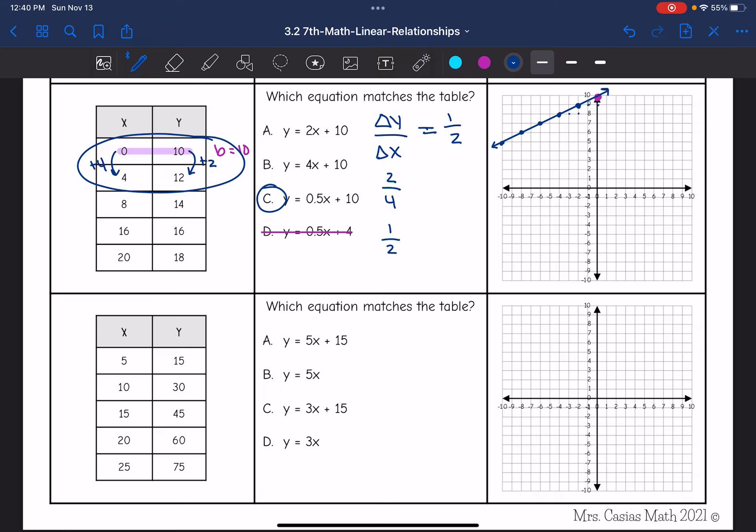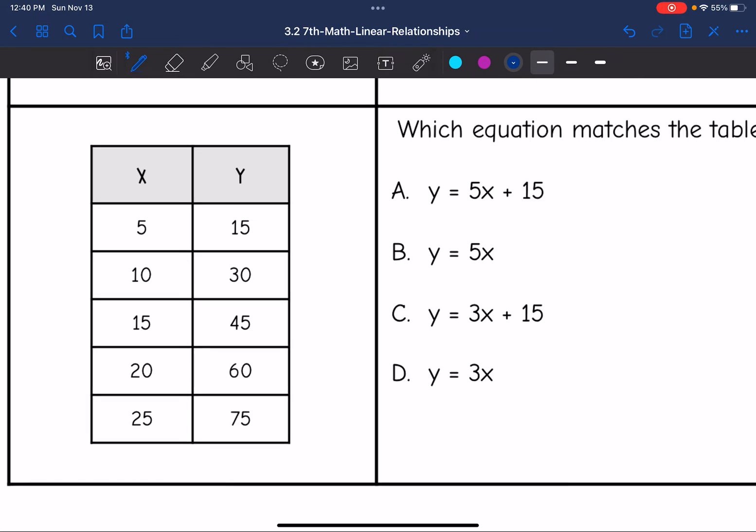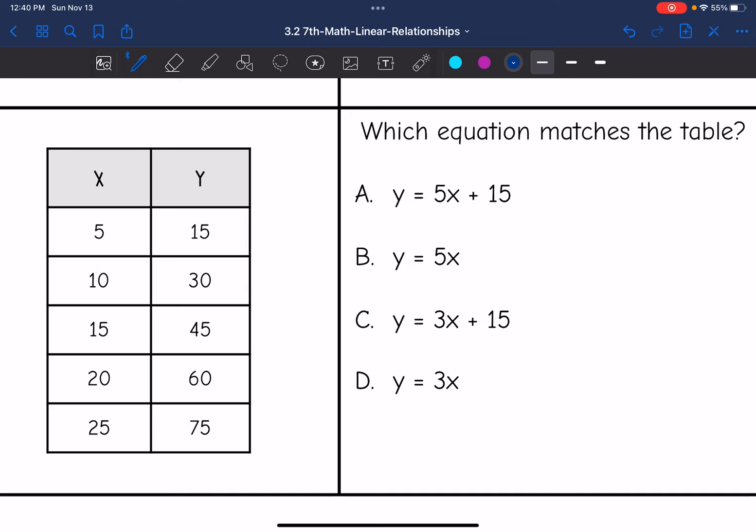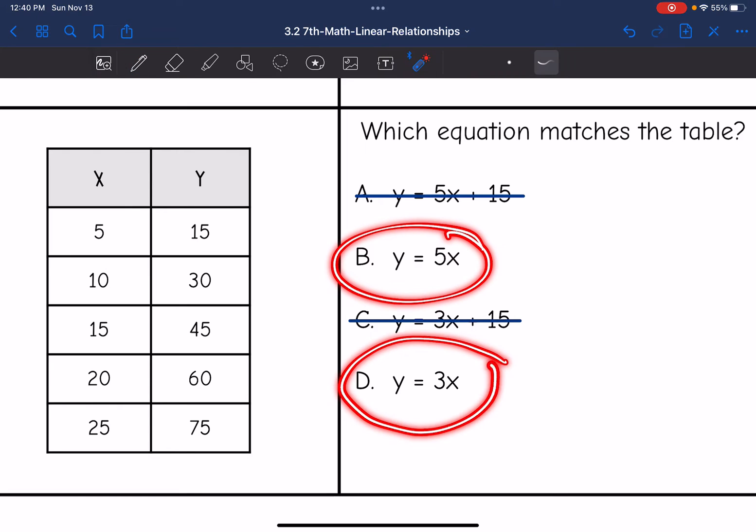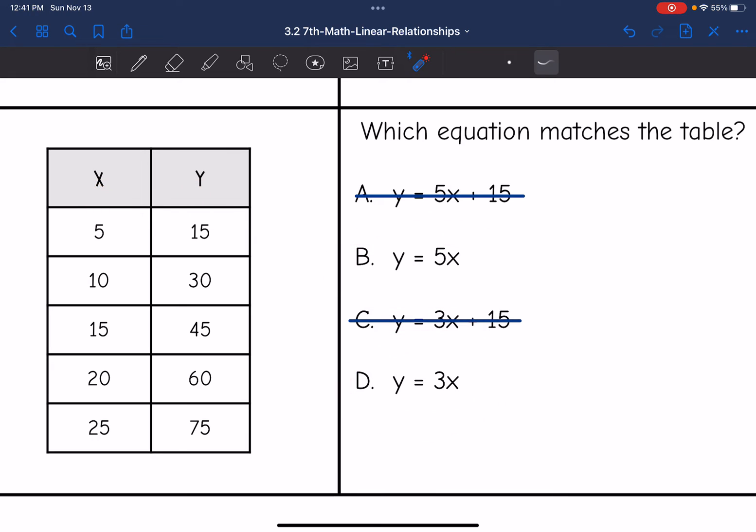Last one, it says which equation matches the table. So I do not see a y intercept because they did not tell me what the x value is when the y value is zero. But I see this point 5, 15 and it's clearly not the y intercept. So that means I can eliminate answer choice A and answer choice C because I know the y intercept is not 15. So with these two answers that I have left, it means I must have a proportional relationship, meaning the y value when x is zero would also be zero. Let's do a little bit more investigating to see if that holds true.